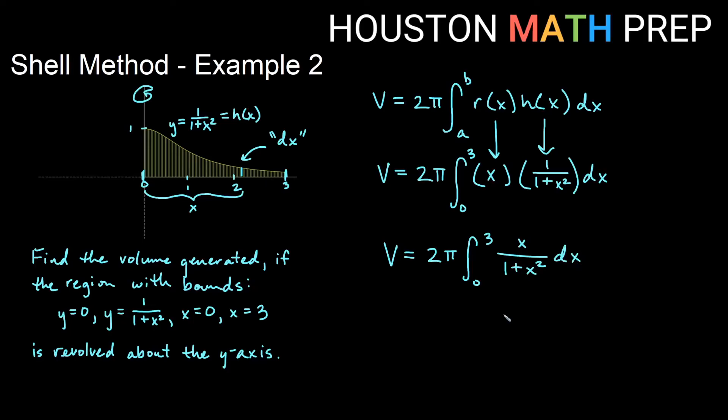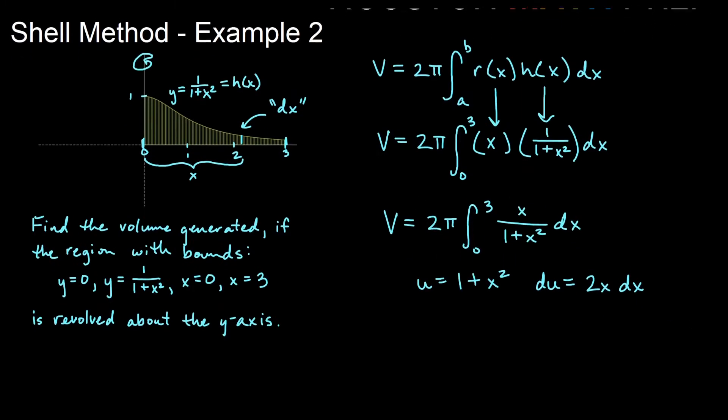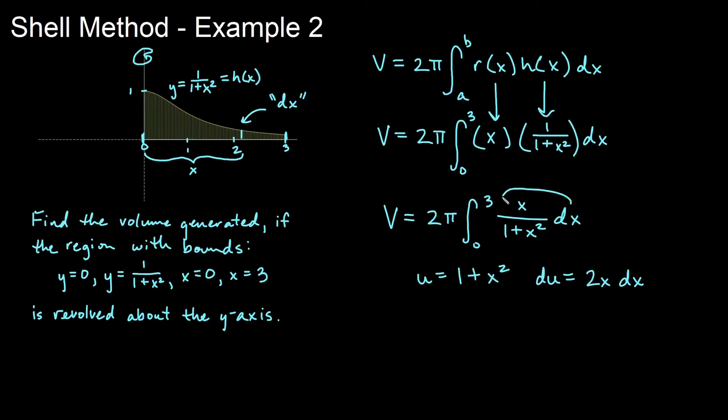So I would choose u equals 1 plus x squared, and the derivative of that would be 2x dx. So du is 2x dx. You could include the two inside if you want, but let's say I don't do that. This is just x dx up here. I want to figure out what x dx is. You could simply divide both sides by 2 and get an exact substitution for x dx. Now we can see x dx is actually one-half du.